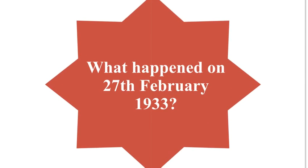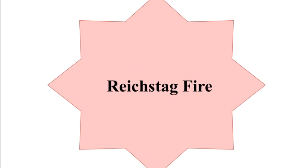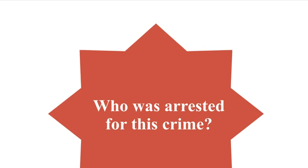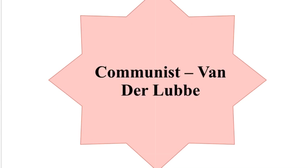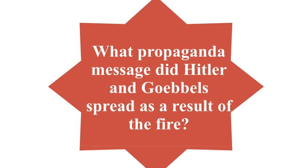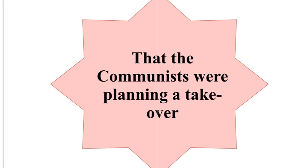What happened on the 27th of February 1933? The Reichstag Fire. Who was arrested for this crime? A Communist, Van der Loeb. What propaganda message did Hitler and Goebbels spread as a result of the fire? That the Communists were planning a takeover.